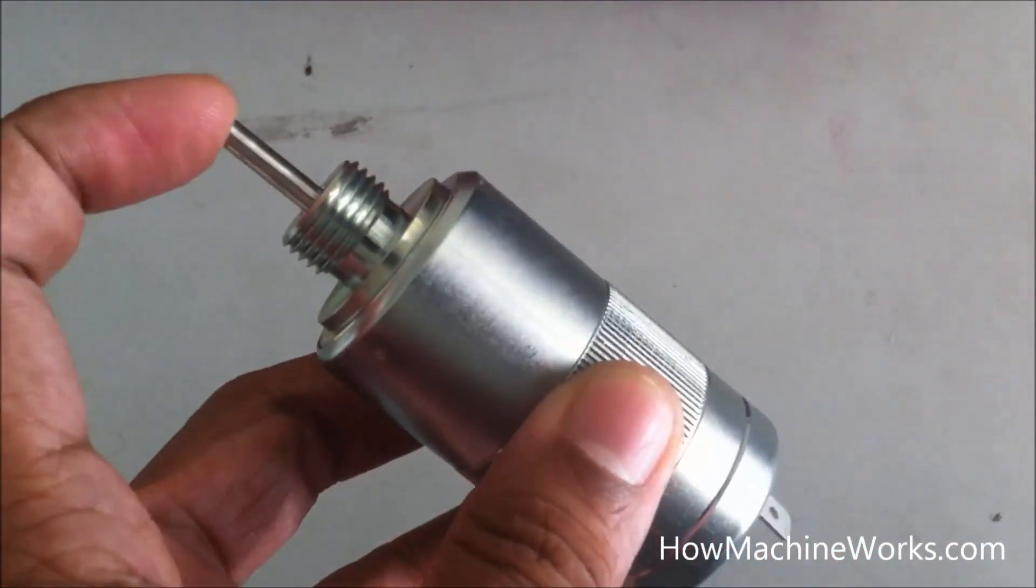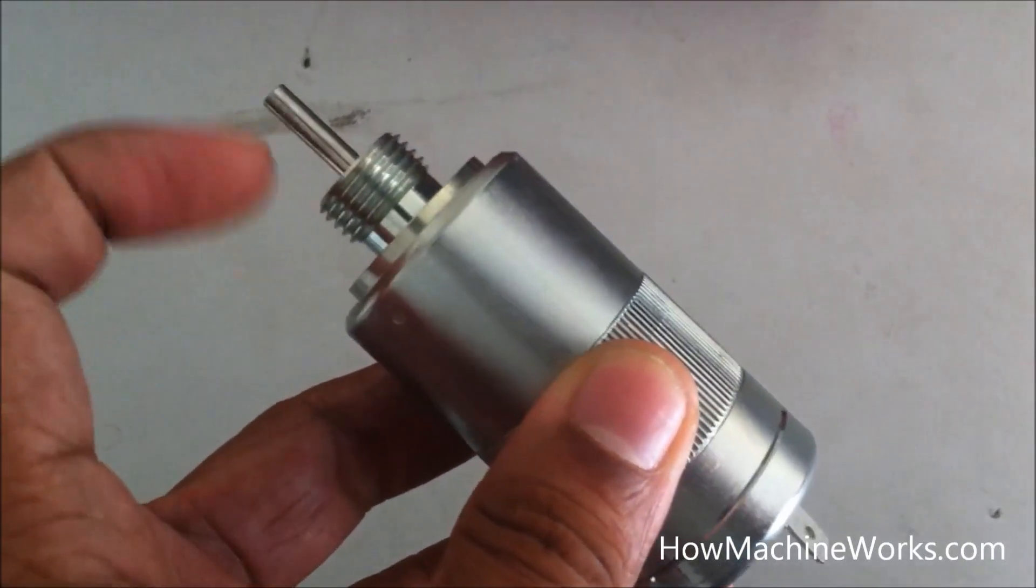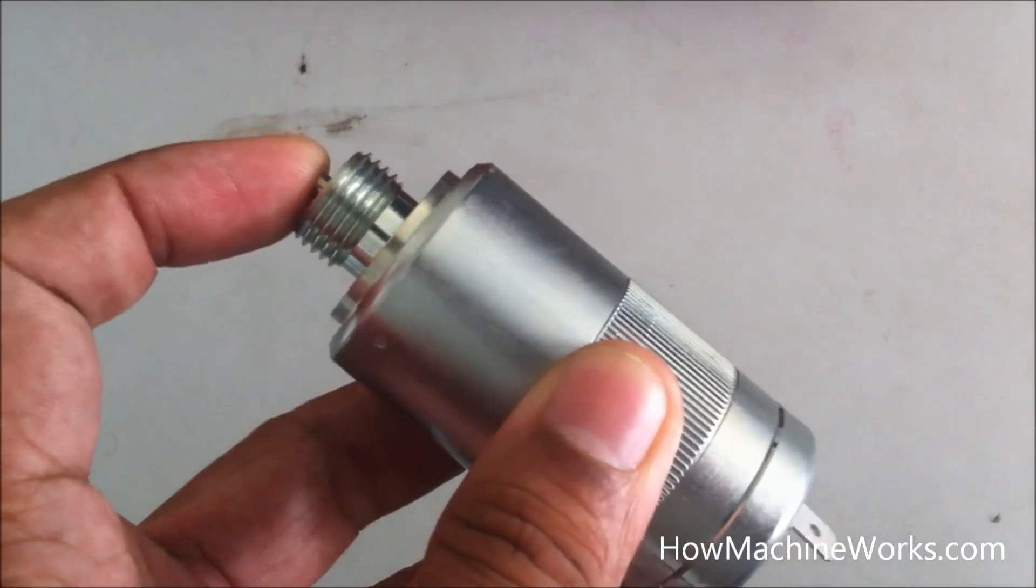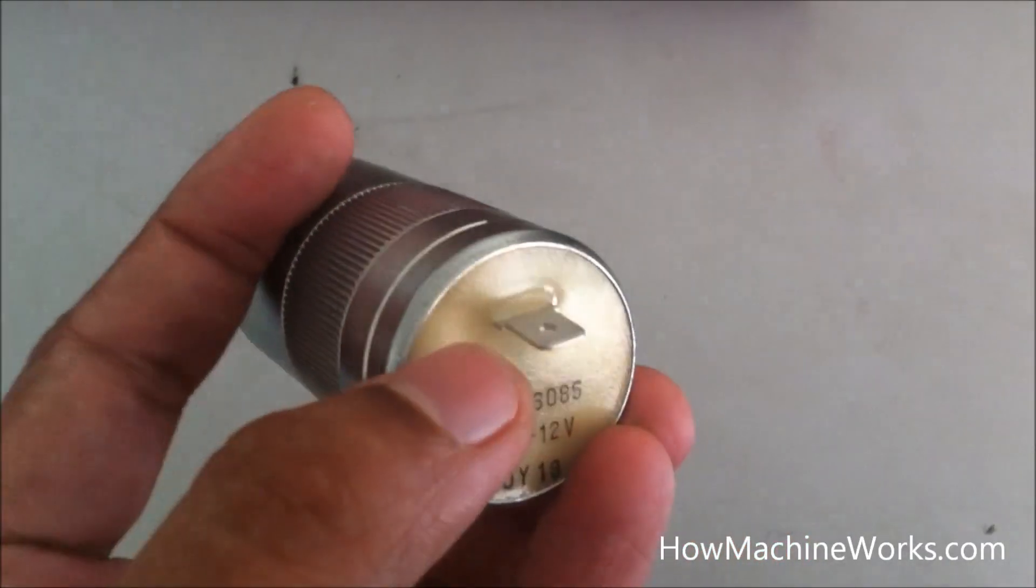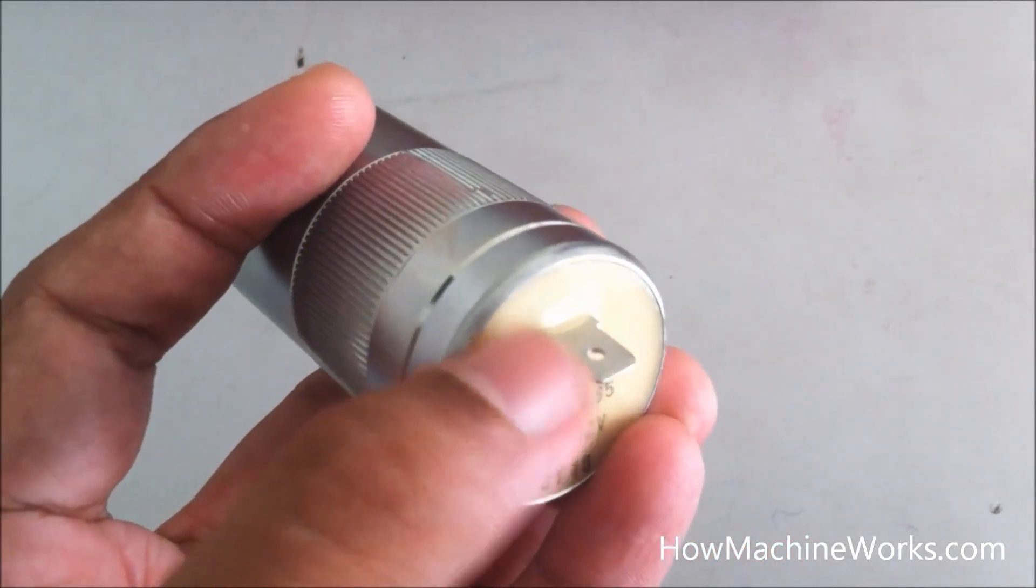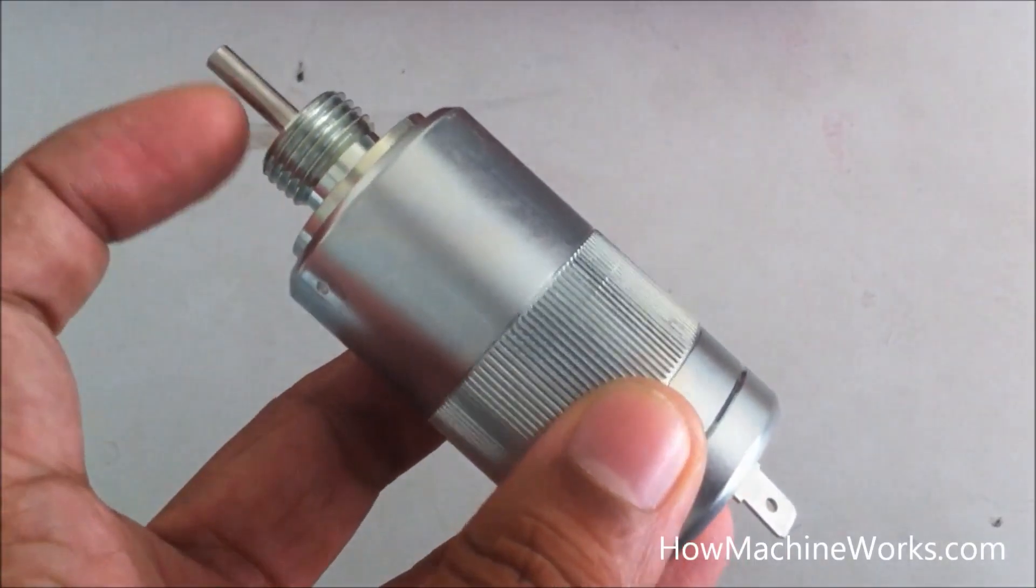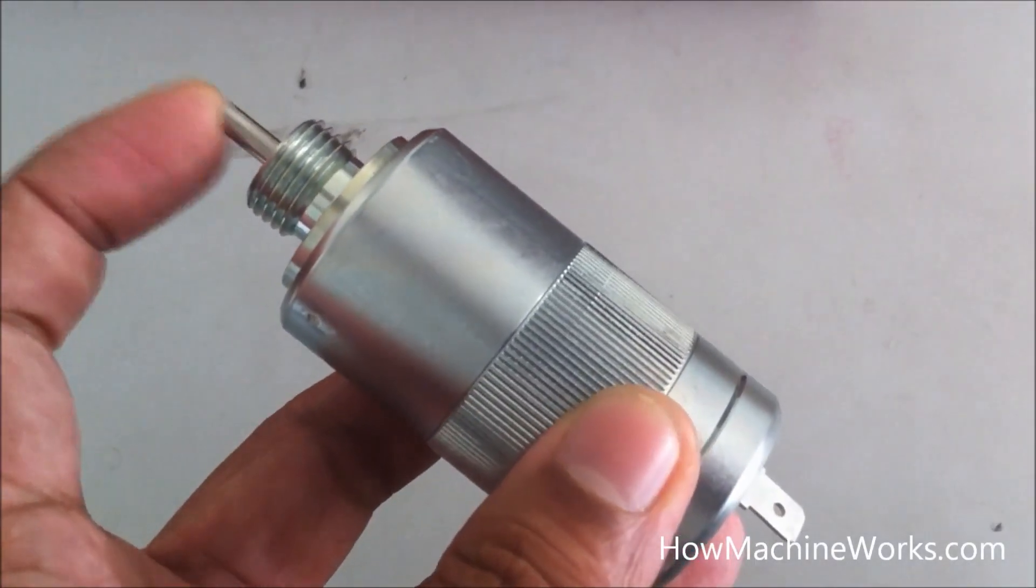So that's a stop solenoid over there. This shaft has been protruded outside. That's the normal condition of the stop solenoid. And it has an electromagnet inside. When you give power to that lead at the rear, the 12V power, as you turn on the ignition key...